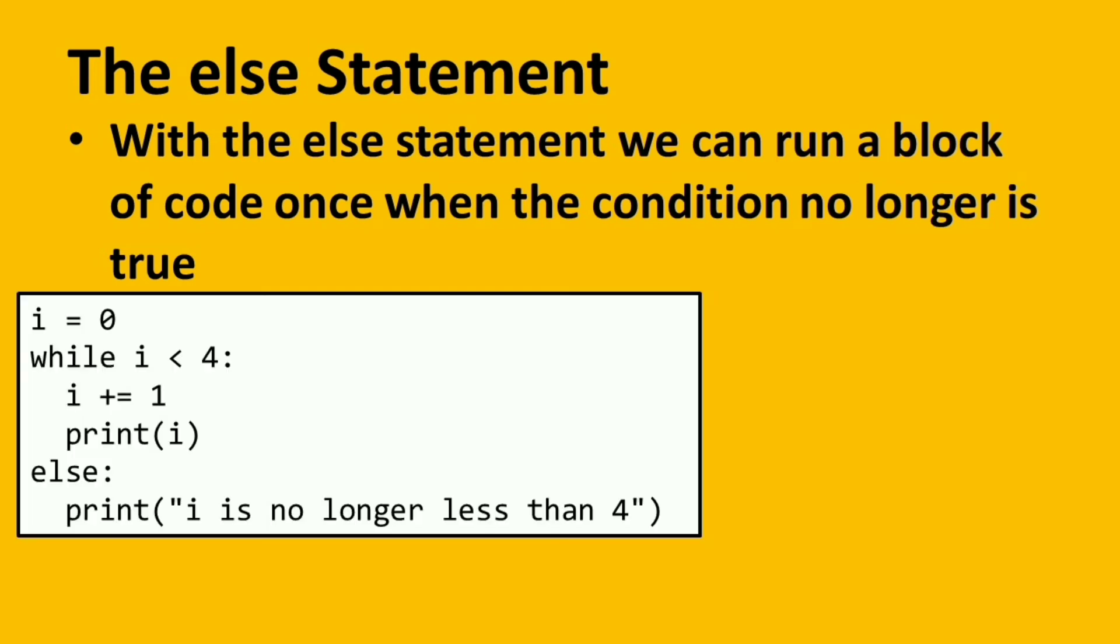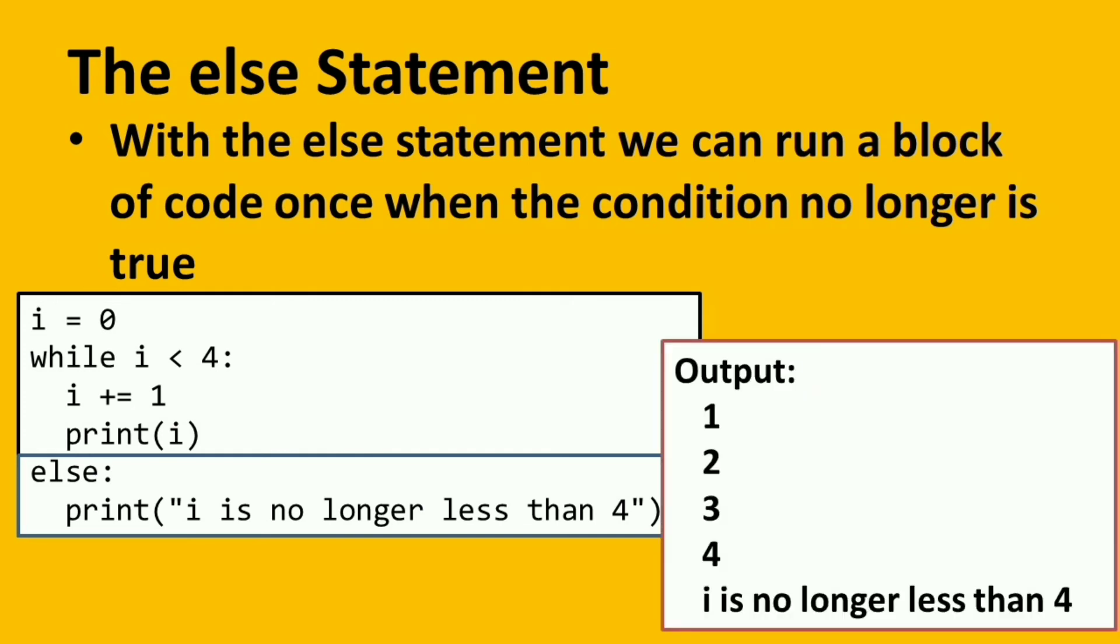Okay. So we have this code. So sa baba, makikita nyo, we have the else. When i is no longer less than 4. So ibig sabihin yan guys, once na the value of i is equal to 4 or higher, mag-i-stop na po yung loop. Tsaka niya gagawin yung code under the else keyword. So if we're going to run this program, we have this output. So observe, nag-print muna siya ng i. Then nakalagay dyan, i is no longer less than 4. So once na nag-false na po yung condition, ang next na gagawin is the else.